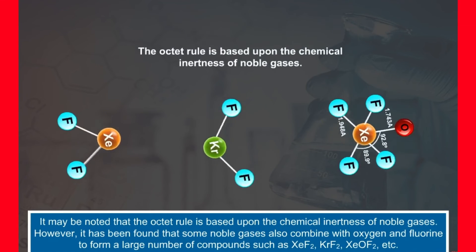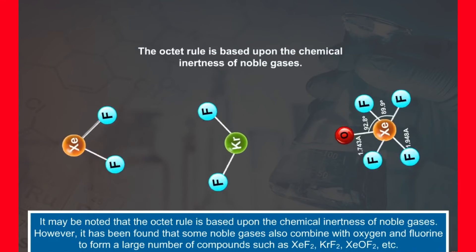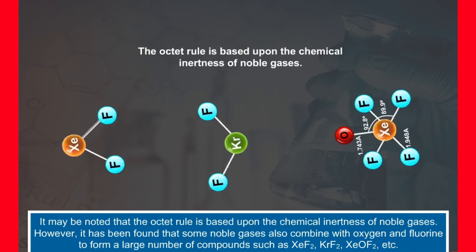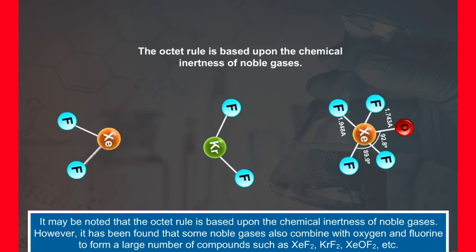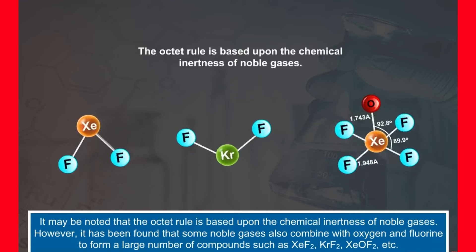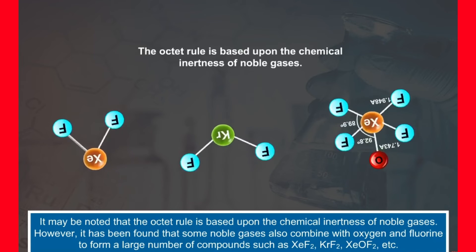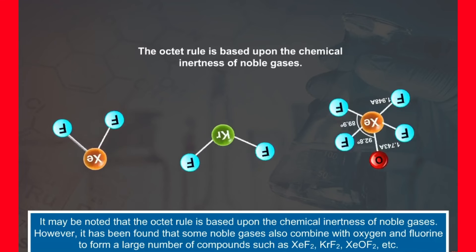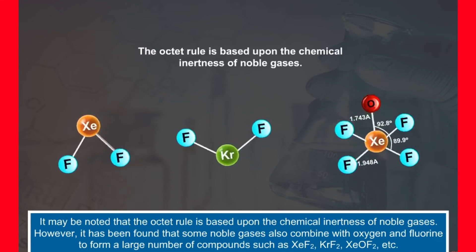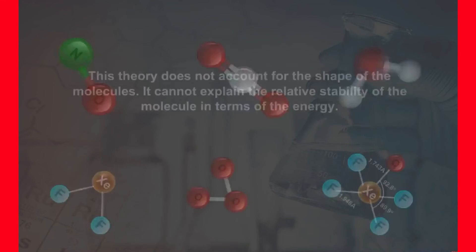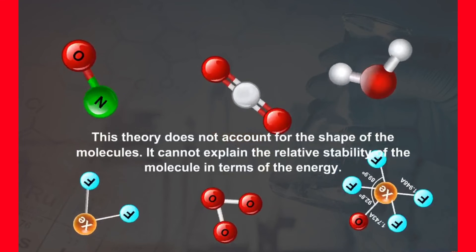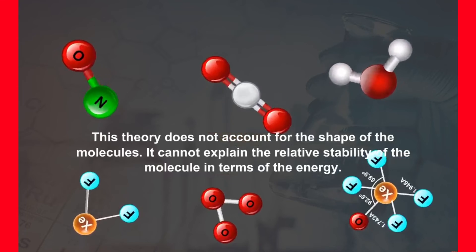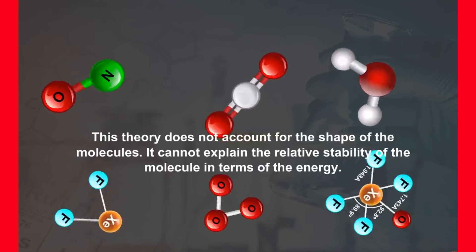It may be noted that the octet rule is based upon the chemical inertness of noble gases. However, it has been found that some noble gases also combine with oxygen and fluorine to form a large number of compounds such as XeF2, KrF2, XeOF2, etc. This theory does not account for the shape of the molecules. It cannot explain the relative stability of the molecule in terms of the energy.